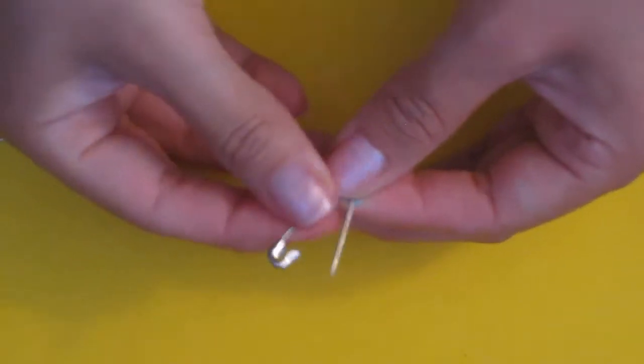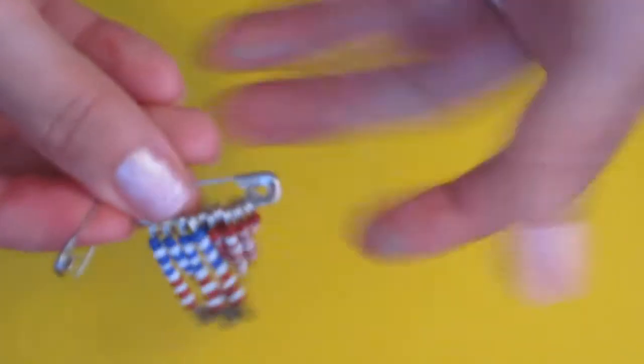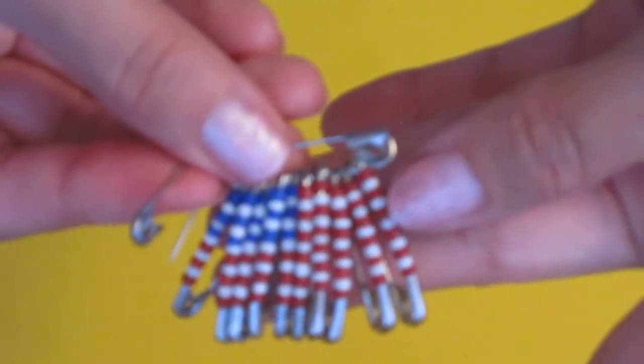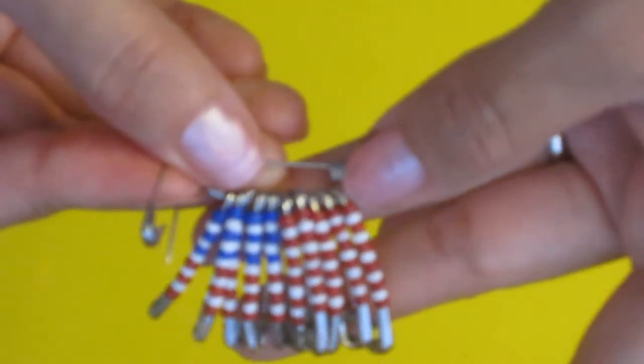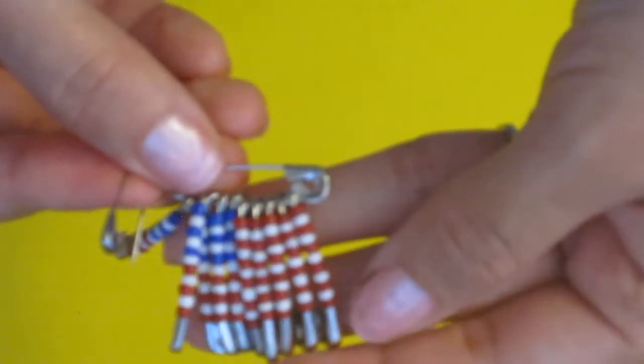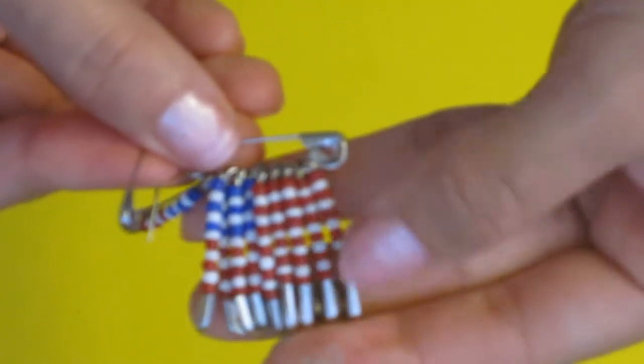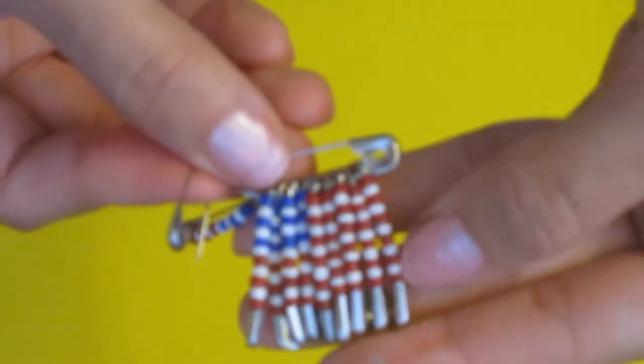So first you can get any size of safety pin you like, any color of beads, anything you like. For 4th of July, I'm just gonna use the red, white, and blue. To start off, I'm gonna show you how to put the beads in the safety pin. And a hint: if you're gonna start off with the color red, it must end with red so it can match.